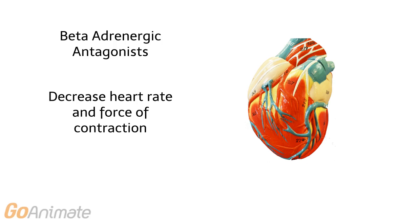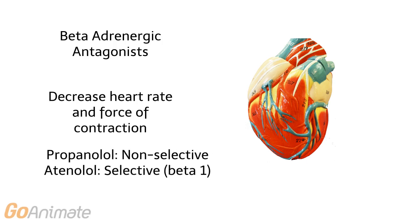Beta-blockers are used to treat the cardiovascular system. They work to decrease heart rate and force of contraction. Non-selective beta-blockers such as propranolol block both types of receptors and can exhibit more side effects than selective beta-blockers such as atenolol, which only blocks beta-1 receptors. Selective beta-blockers are also known as cardio-selective because they produce fewer side effects on non-cardiac tissue.